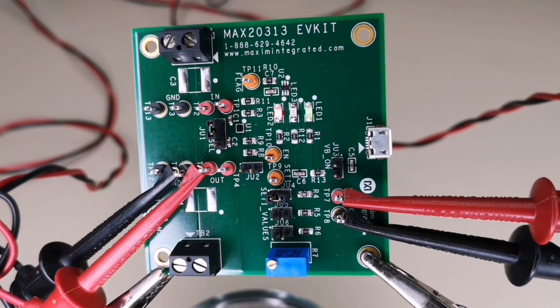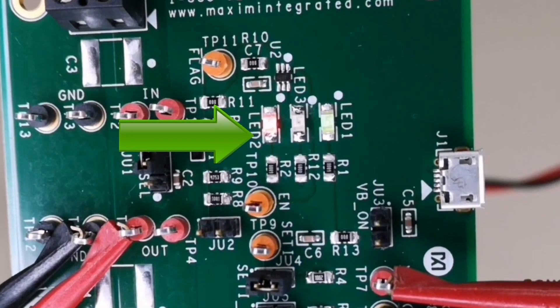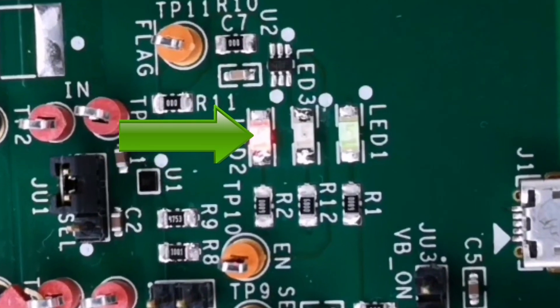The load current was increased to 2 amps and we can see the output current has dropped and the red LED light has indicated that the fault flag has asserted.